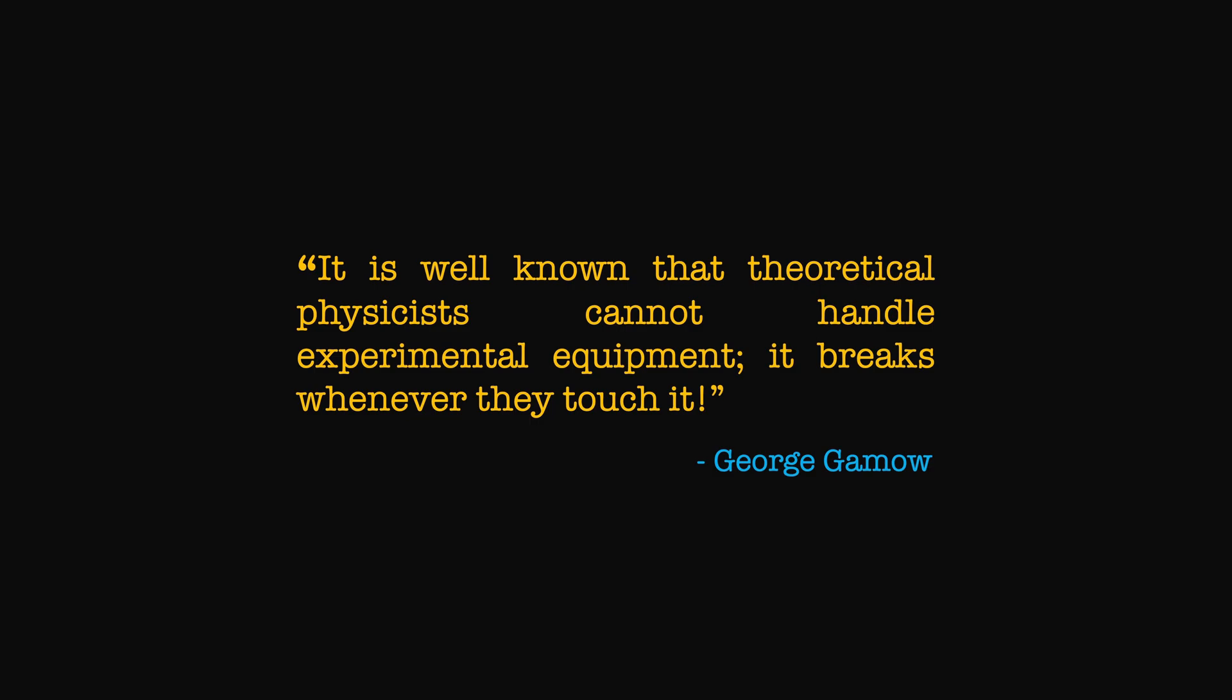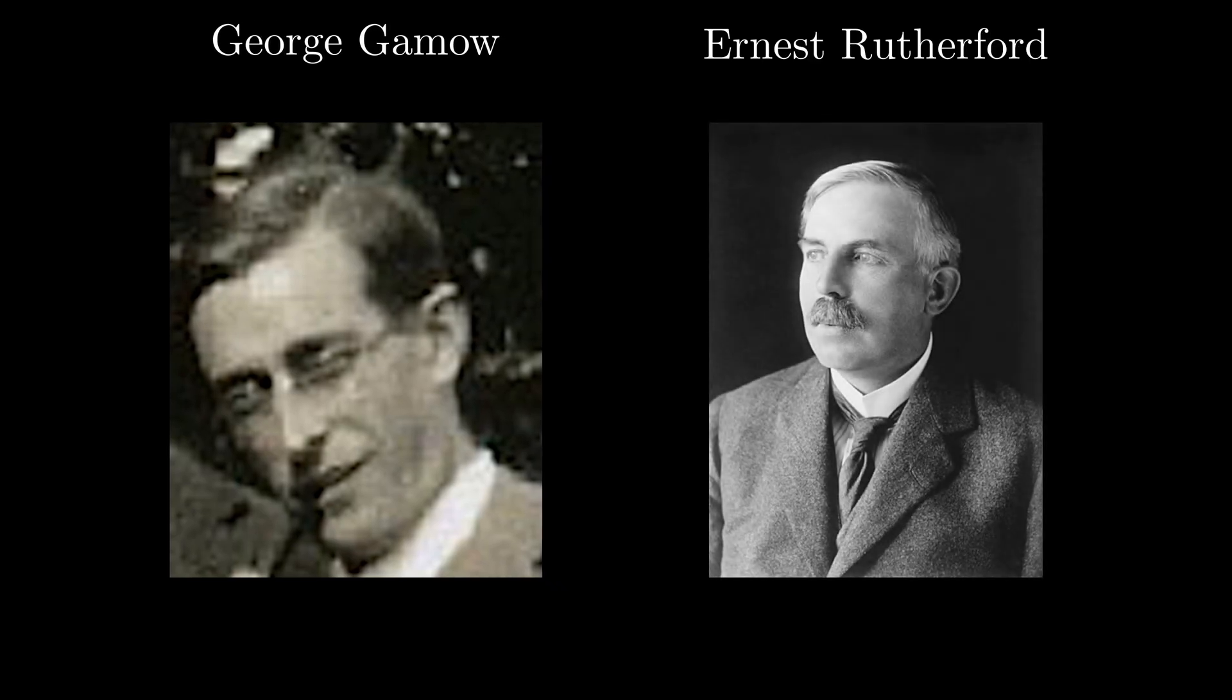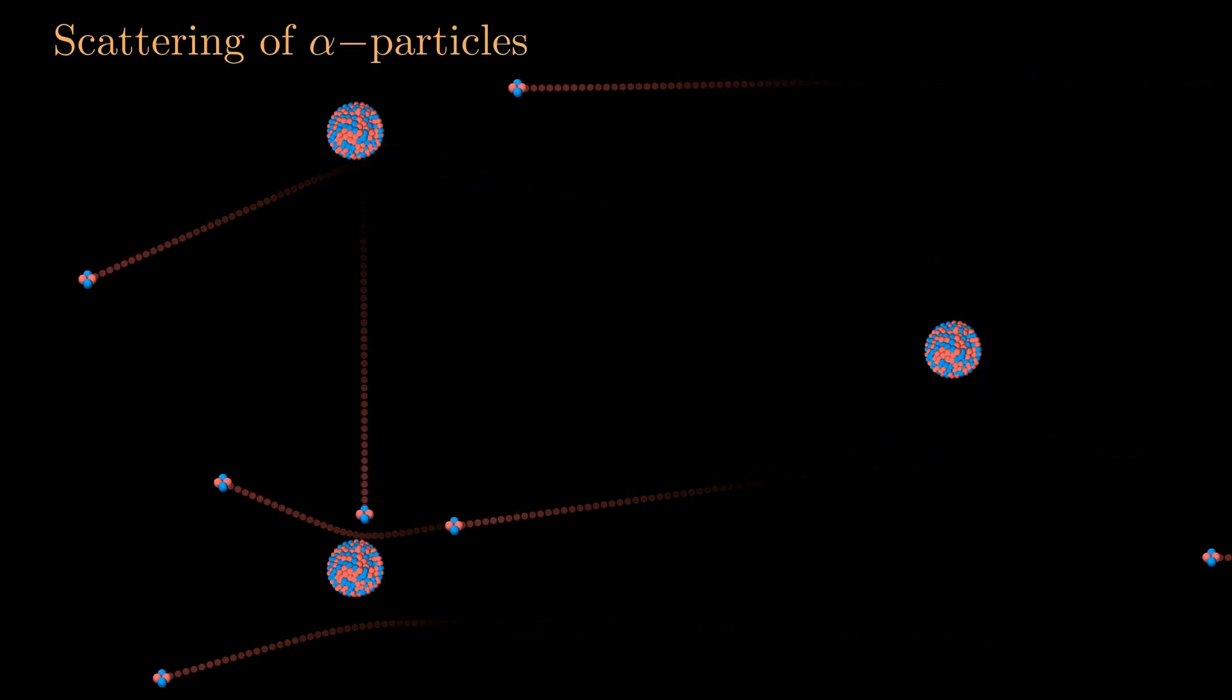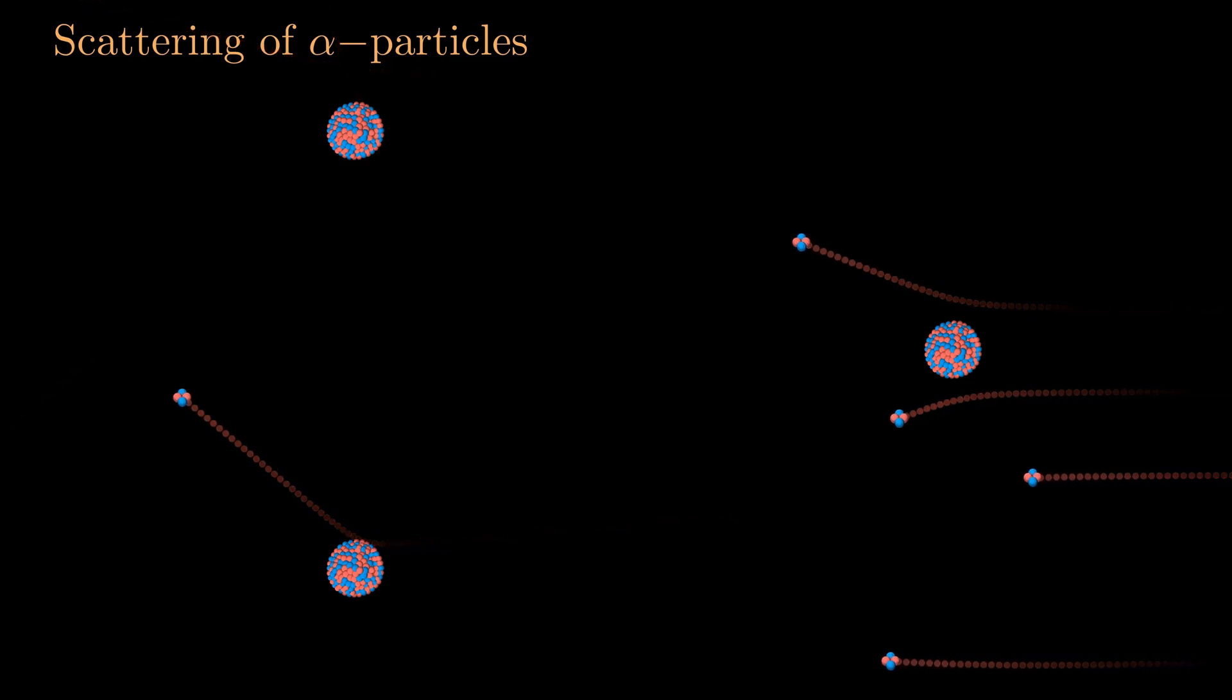A young George Gamow, just 24 years old, arrived at the University of Göttingen for a summer program in 1928. On his very first day at the University Library, he stumbled upon Ernest Rutherford's 1927 article in the philosophical magazine about the puzzle surrounding Hans Geiger's 1921 experiments on scattering of alpha particles from uranium-238 nucleus.